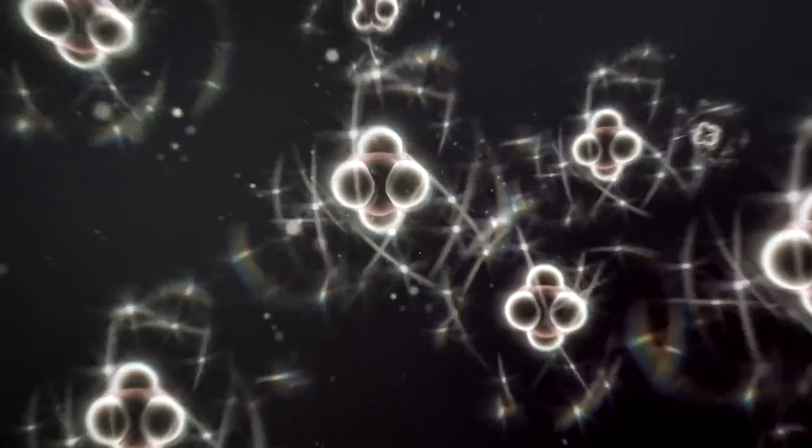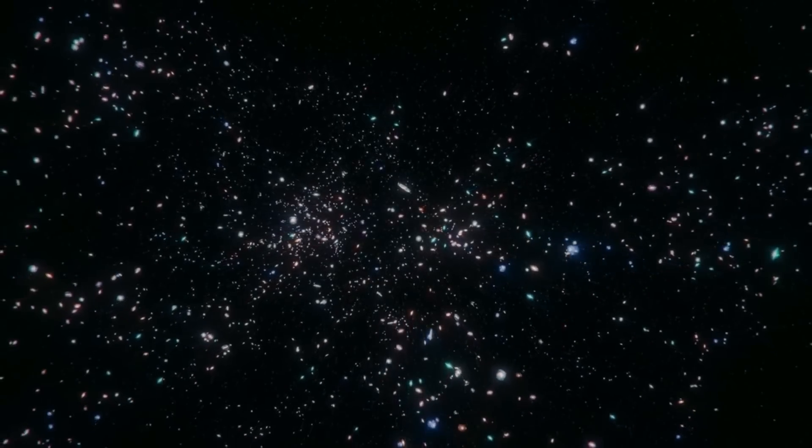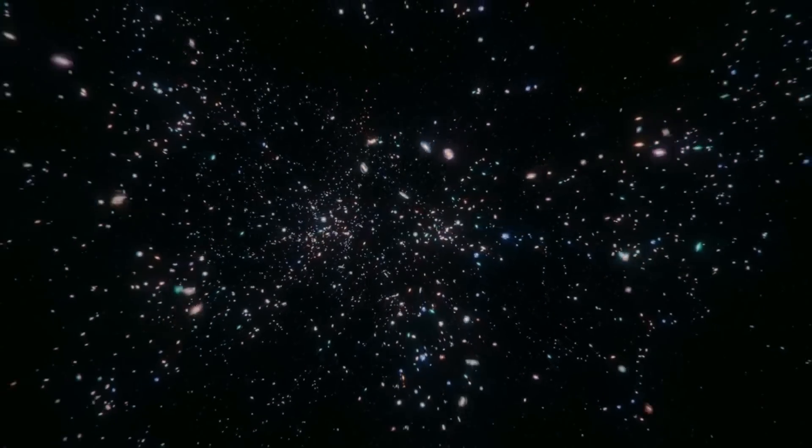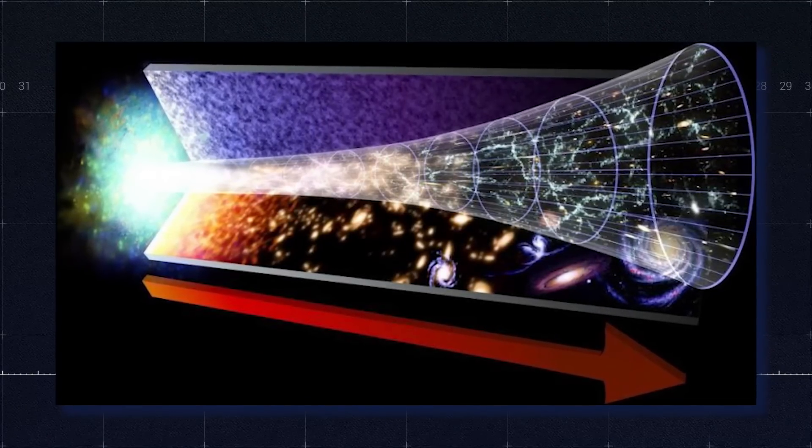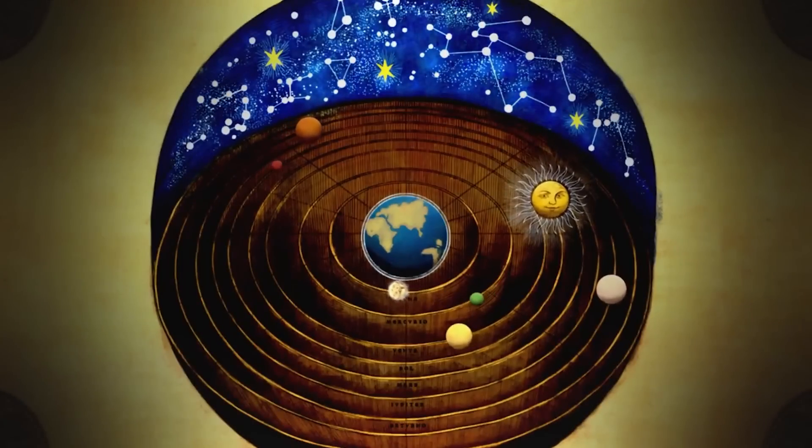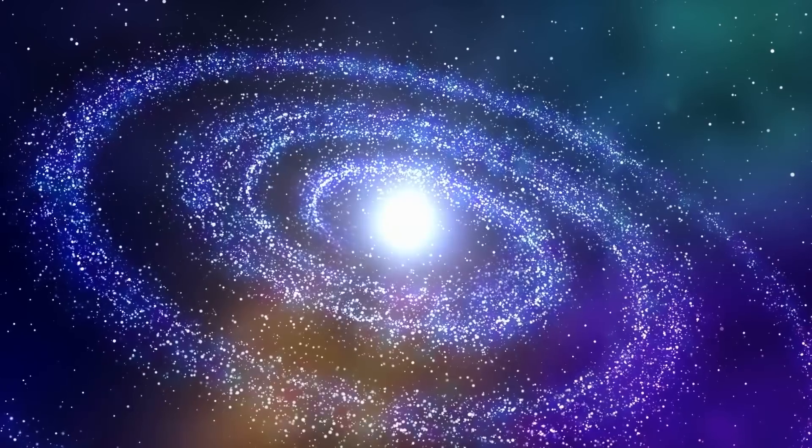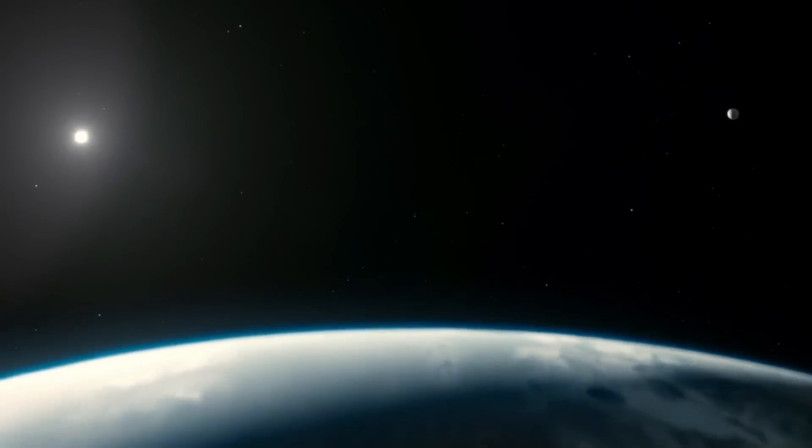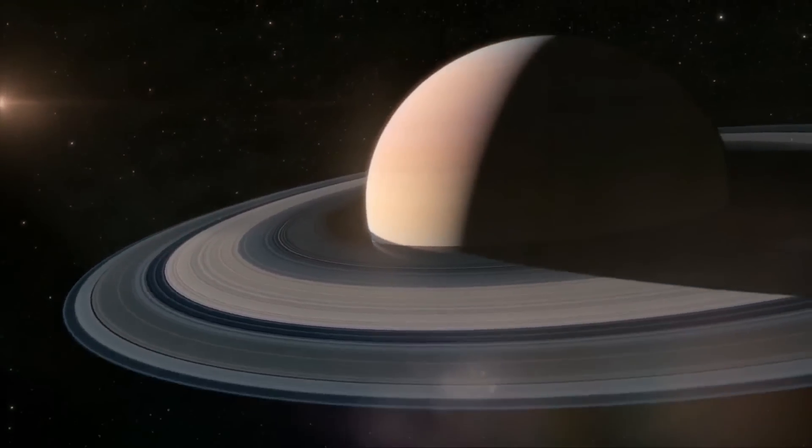Since particle energies would have dropped to values that particle physics experiments can obtain, this period onward is subject to less speculation. This was then followed by the structure epoch, which expands over billions of years down to our day. The slightly denser regions of the almost uniformly distributed matter of the universe began to become gravitationally attracted to each other. They therefore grew even denser, forming gas clouds, stars, galaxies, and the other astronomical structures that we regularly observe today. It was during this time that the modern universe began to take shape.